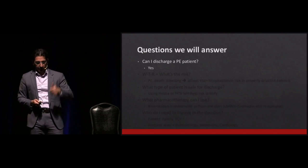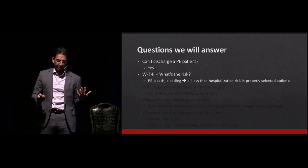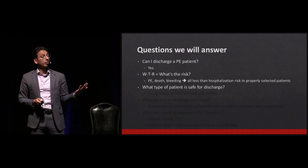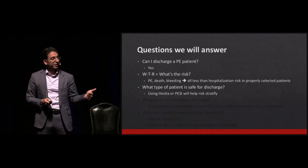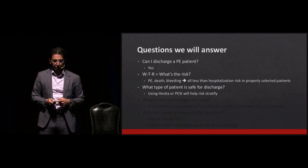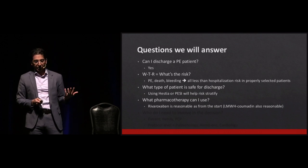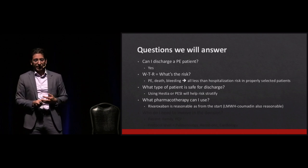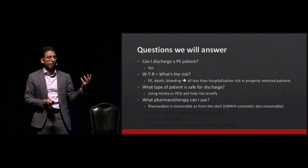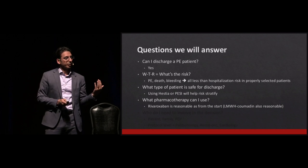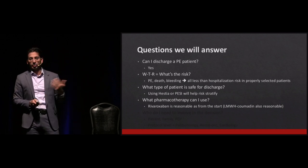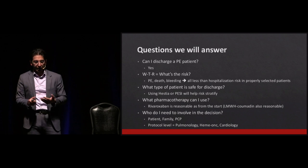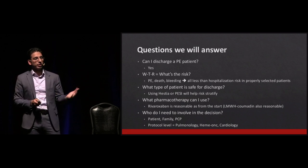Summary: Can I discharge a PE patient? Yes. What's the risk? PE, death, and bleeding are all less than or equal to hospitalization risk in properly selected patients. What type of patient? Hestia criteria or PESI score help risk stratify. What pharmacotherapy? Low molecular weight heparin or Coumadin, or rivaroxaban. Apixaban and other DOACs are probably also fine, though the data for them is less robust than rivaroxaban. Who needs to be involved? The patient, family, PCP, specialists, and at the protocol level, make sure they're on board.